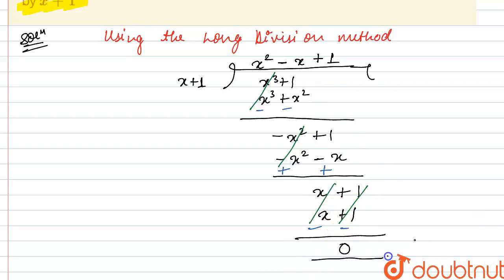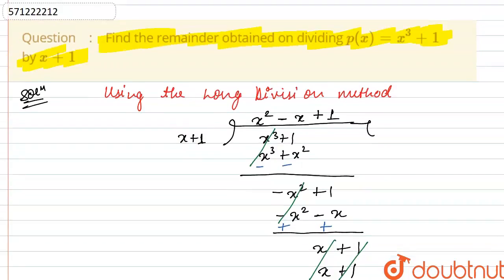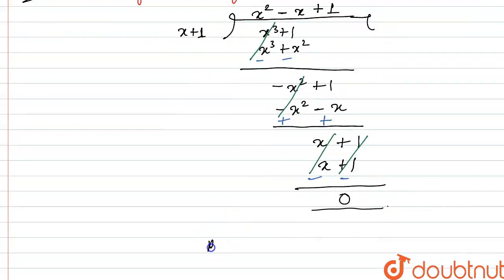So we will get 0 in the remainder and this is what we need to find. We need to find the remainder. So remainder is coming out to be equal to 0 when this polynomial p(x) is divided by x plus 1.